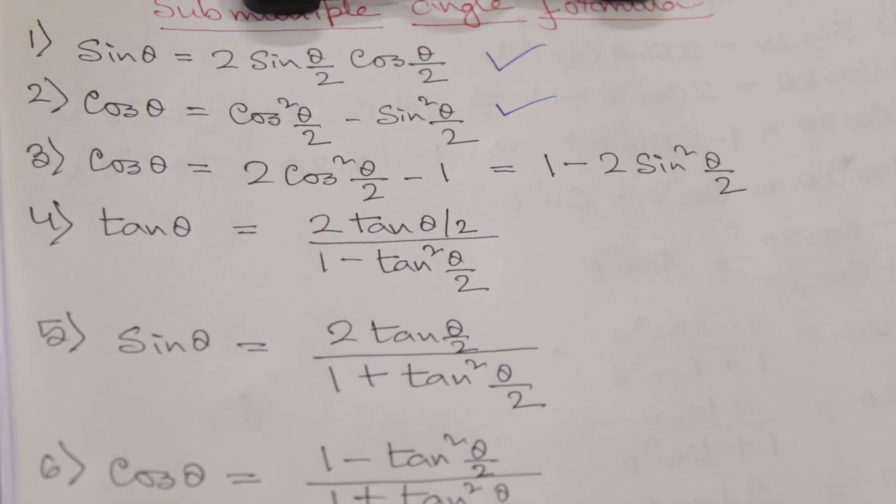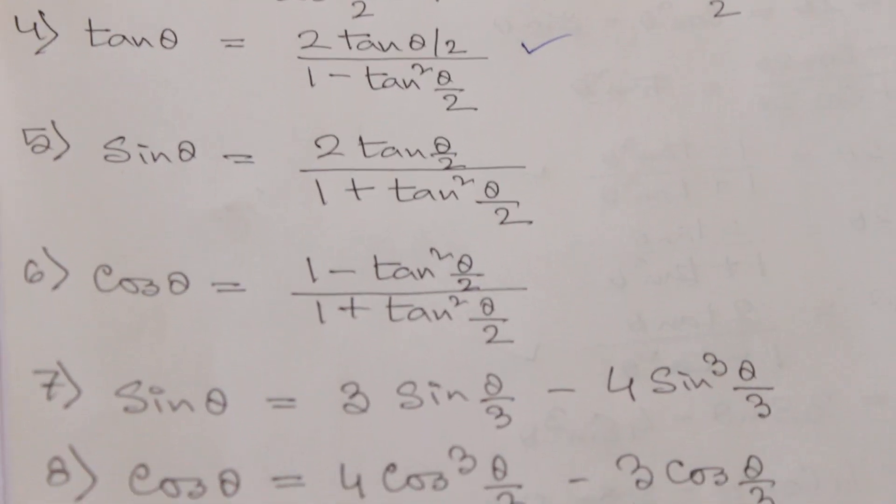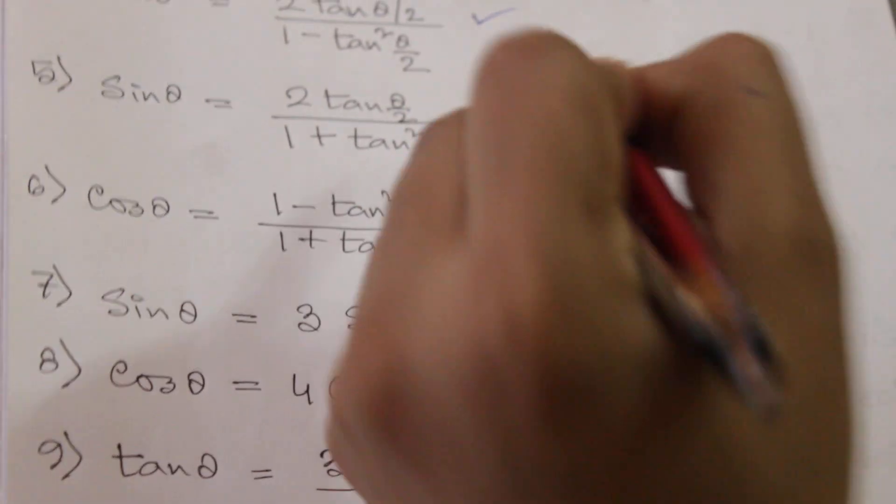Formula tan θ is 2 tan θ/2 by 1 minus tan² θ/2. Formula sin θ is 2 tan θ/2 by 1 plus tan² θ/2.